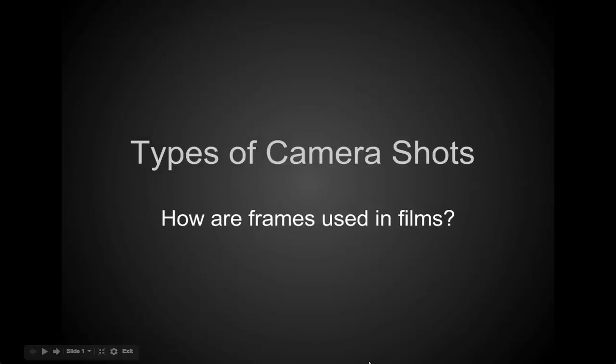This is a semi-lecture on types of camera shots. The goal is to use Season 1, Episode 5 of Lost to show what are typical shots that you would see all over film.